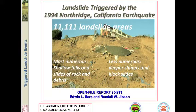In the second example from the USA, from Northridge, this was a large earthquake that occurred in 1994, and there were over 10,000 landslides triggered from this event. These were mostly shallow falls and slides of rock and debris.